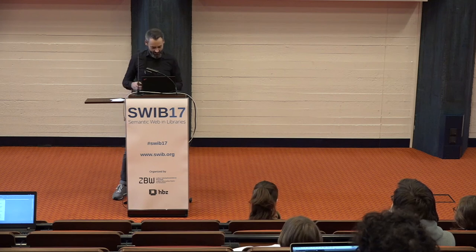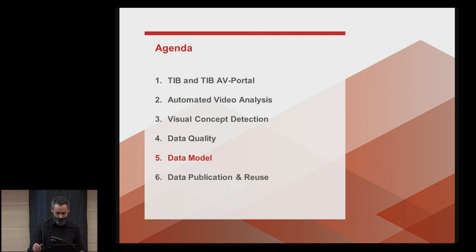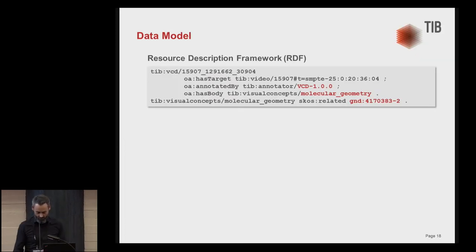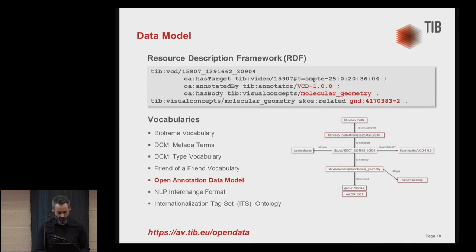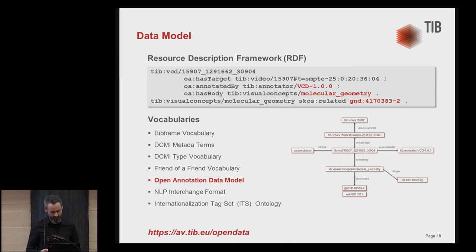Since this is about semantic web and linked open data, let's look at our data model. All metadata we have and are extracting is expressed and stored as RDF — we have a triple store on the back end. In this example, you can see the annotation with molecular geometry I showed earlier: an annotation was done by the visual concept detection, it was annotated, and here is the link to the GND entity. The model we use is the open annotation data model.